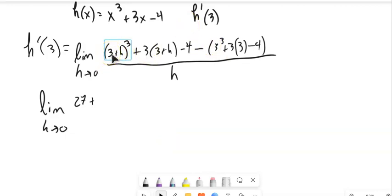3 times the first one squared times the second one. So it's going to be 3 times 3 squared times h. So 27h plus 3 times the first one times the second one squared times 3 times h squared. So 9h squared plus the last one cubed. That's just the expansion of this 3 plus h cubed.